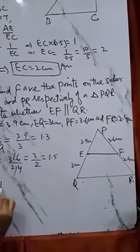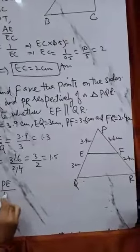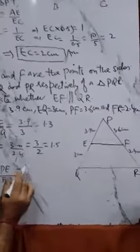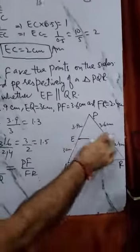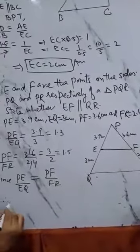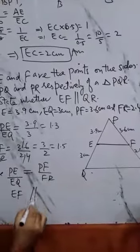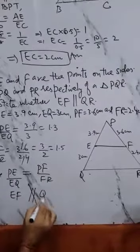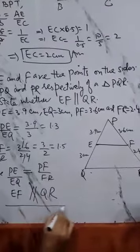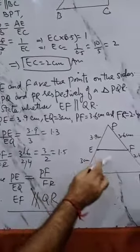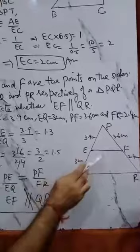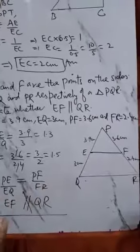1.3. Is this ratio equal? Since PE upon EQ is not equal to PF upon FR, because the two side ratios are not equal, therefore we can write EF is not parallel to QR. When two side ratios are equal, only then the line is parallel.